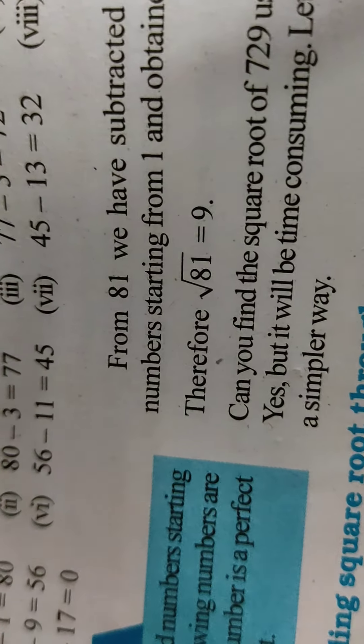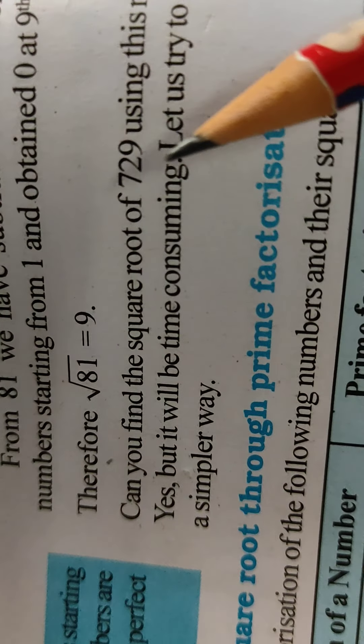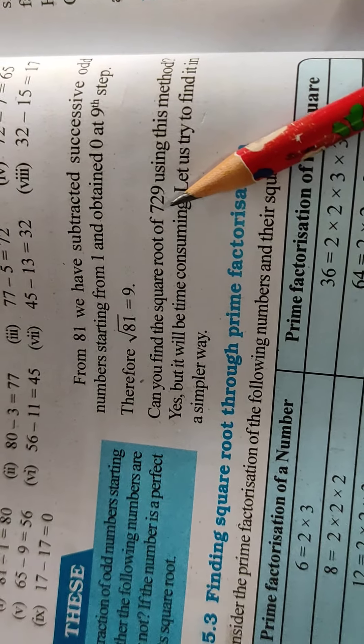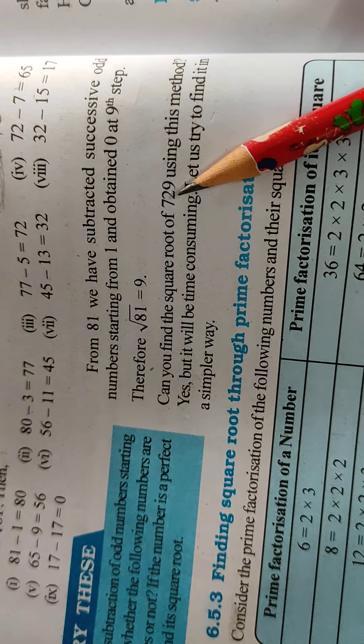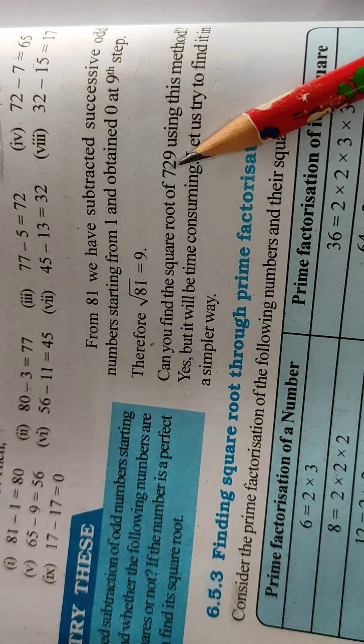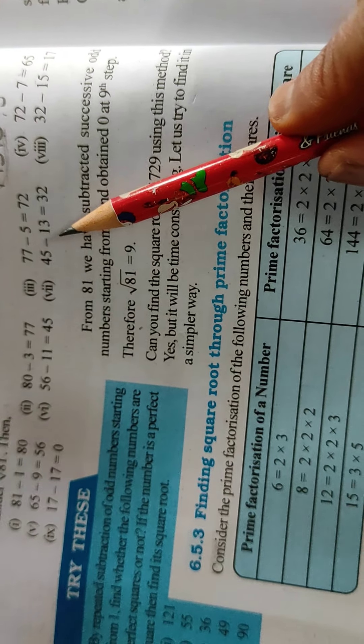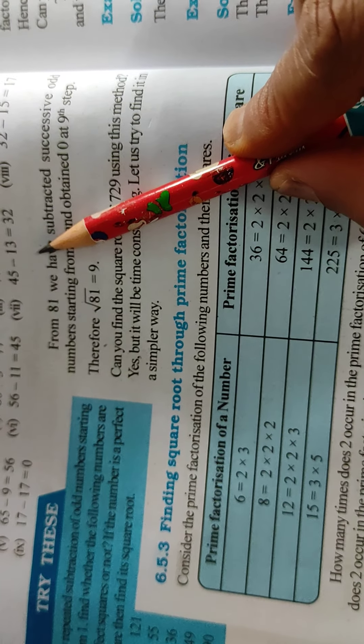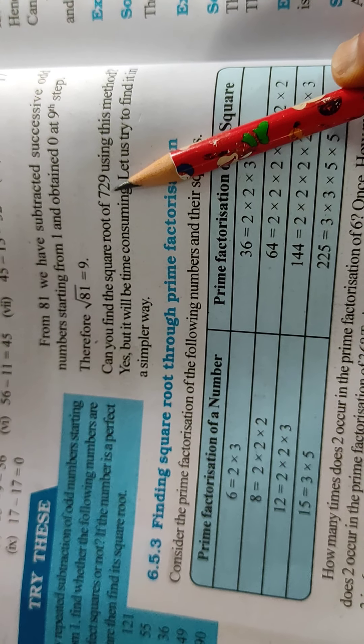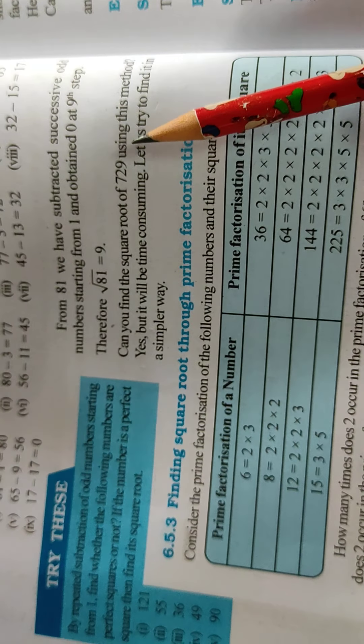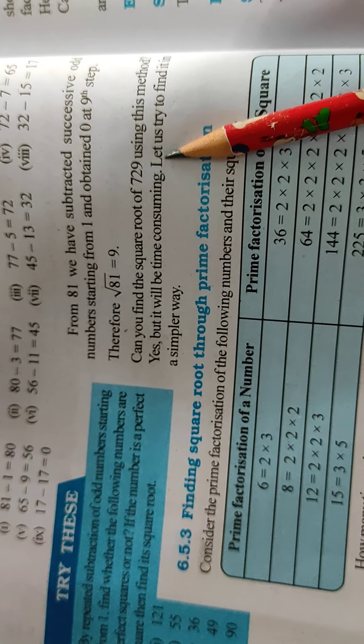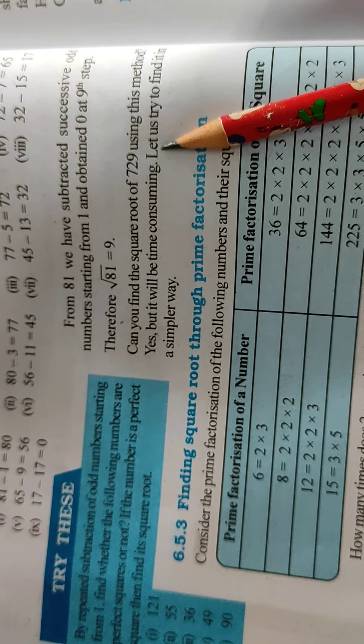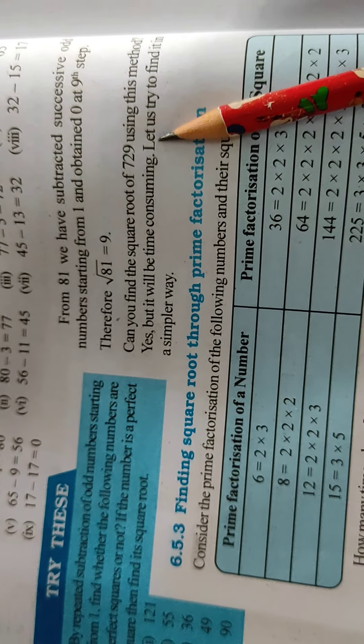Now if we want to calculate the square root of a larger number, 729 minus 1, then 3, then 5, then 7. Here in 81, 9 steps are there. So in 729, so many steps will be there. So this method is time-consuming and lengthy method. Okay.